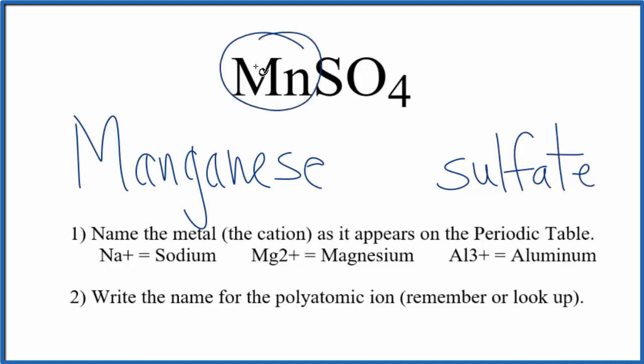But we said manganese here, that's a transition metal. Because of that, it can have different ionic charges depending what it's bonded to. So here it's bonded to the sulfate ion, and the whole sulfate ion has an ionic charge of 2 minus. So the manganese here, that's got to be 2 plus. So the charge balances out, gives us a net charge of zero.